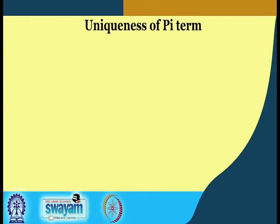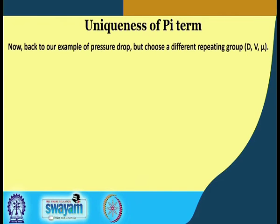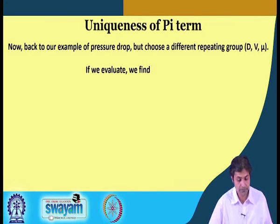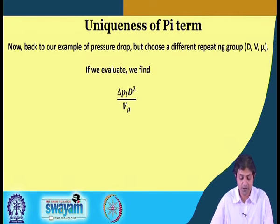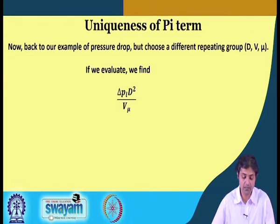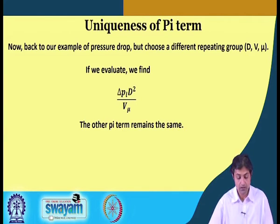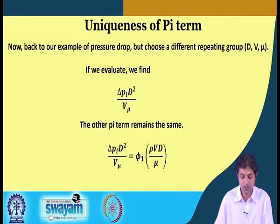Uniqueness of Pi terms. If we go back to our example of pressure drop but choose a different repeating variable — d, v and mu, for example — we will find that the first Pi term is going to be delta-P times l times d-squared multiplied by v times mu. The other Pi term will remain the same on analysis. So we get a slightly different Pi term here.